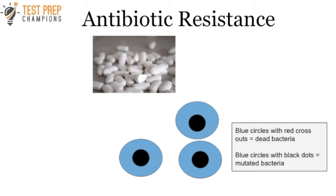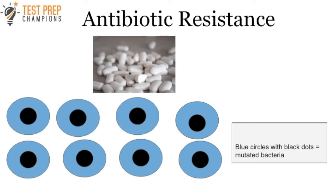We wipe out all the bacteria that aren't resistant, leaving the resistant bacteria to reproduce and multiply. What you're left with is a scenario where the mutated bacteria that won't respond to antibiotics keep reproducing, leaving you with far more antibiotic-resistant bacteria. This is known as antibiotic resistance — your body can stop responding to antibiotics over time. If your doctor prescribes antibiotics, always follow their advice; this is simply a real phenomenon that can happen.